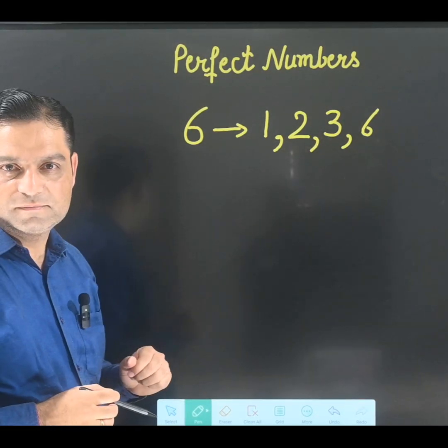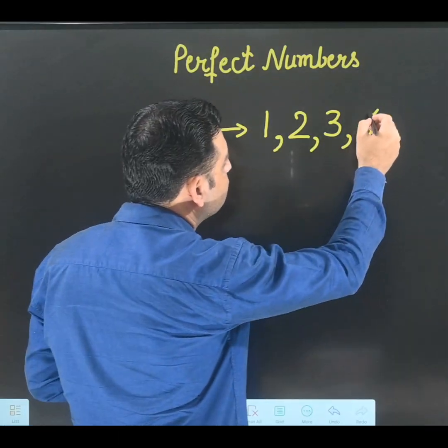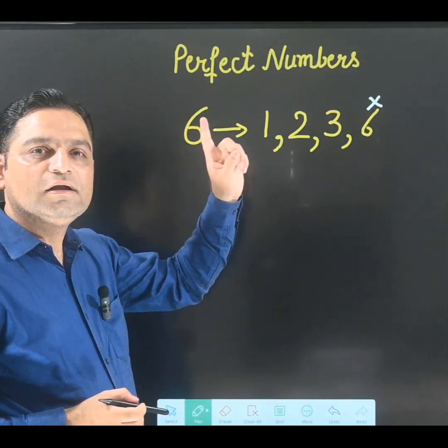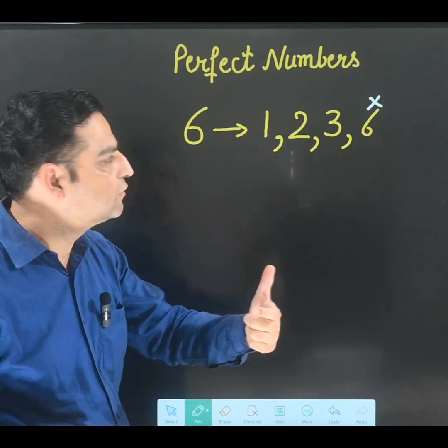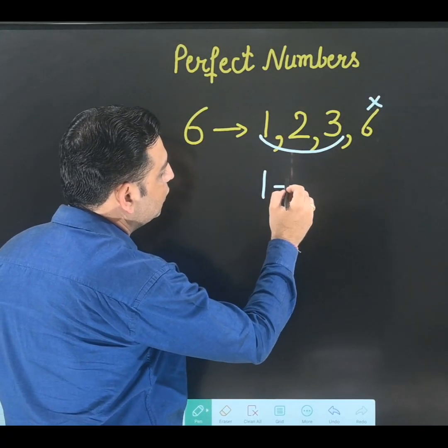I have written all the factors. According to the definition, I am not going to take this 6 because the number itself we will not take. We will take the remaining factors - 1, 2, and 3. If you add one...